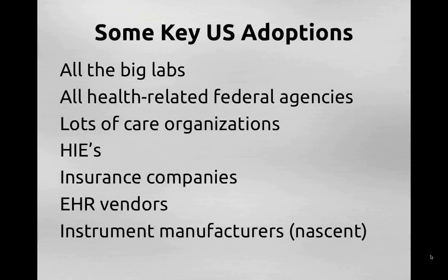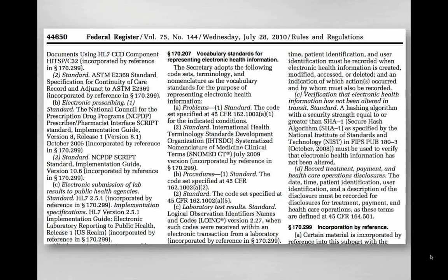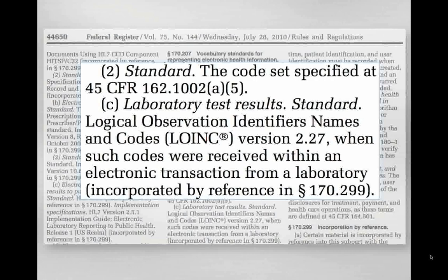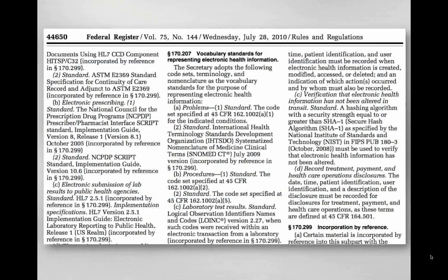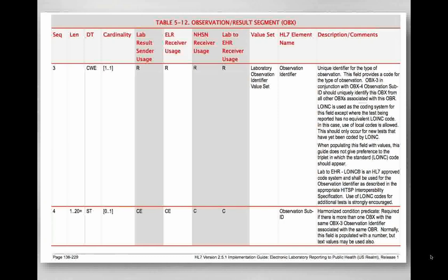One exciting development is a growing interest among instrument manufacturers to link their internal codes to LOINC and provide them to their customers. One of the key things in informatics is the EHR Incentive Program Meaningful Use. The Phase I Meaningful Use regulations require LOINC in a couple of contexts. This shows a snippet from the Federal Register naming LOINC for when codes are received from laboratories, and also in the context of electronic lab submission of results to public health agencies in an HL7 implementation guide.